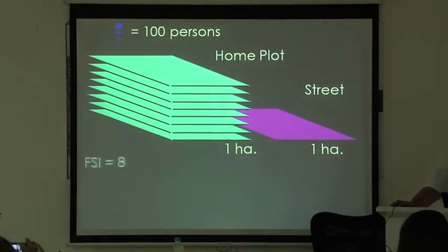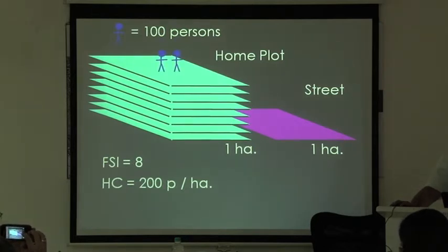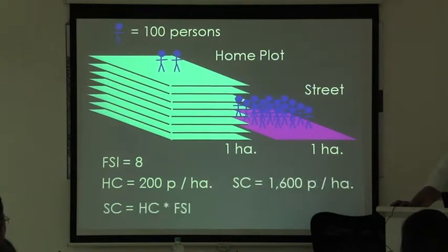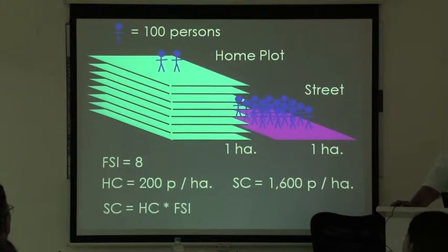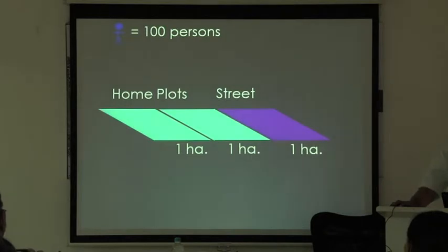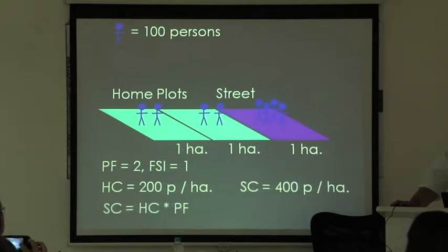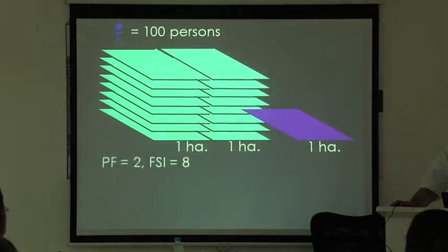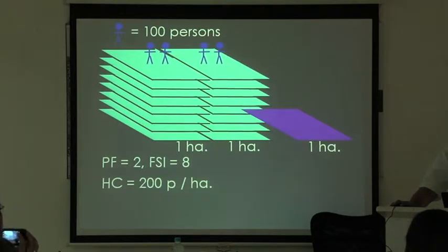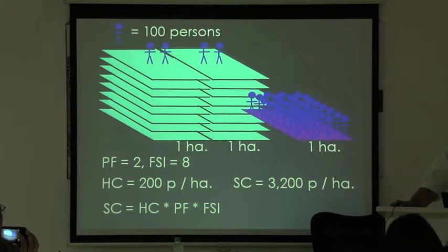Now let's look at FSI. With FSI 8 and home crowding of 200 persons per hectare, street crowding will be 8 times that — 1,600 persons per hectare. So street crowding equals home crowding times FSI. If you have 2 home plots for 1 street plot — plot factor of 2 — with FSI 1 and home crowding of 200, street crowding will be 400. Combining these: plot factor 2, FSI 8, home crowding 200 — street crowding is 3,200 persons per hectare. The final formula is: street crowding equals home crowding times plot factor times FSI.